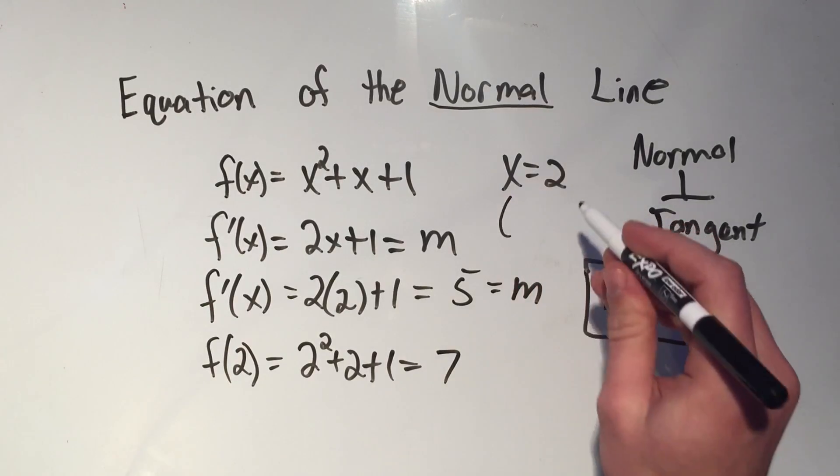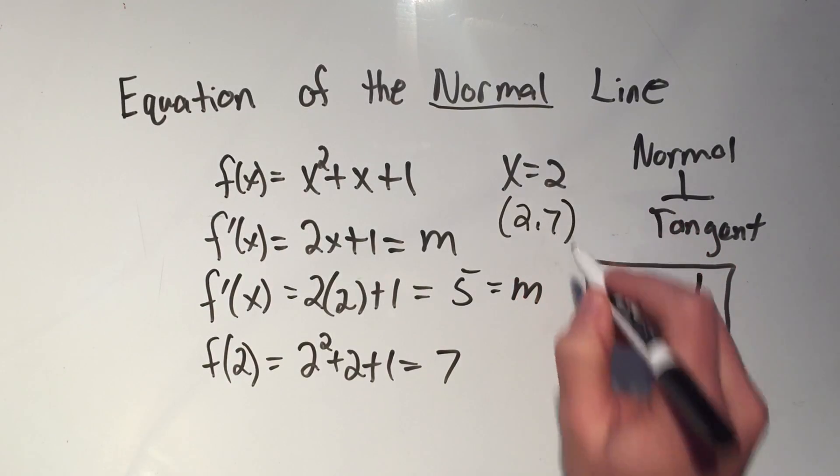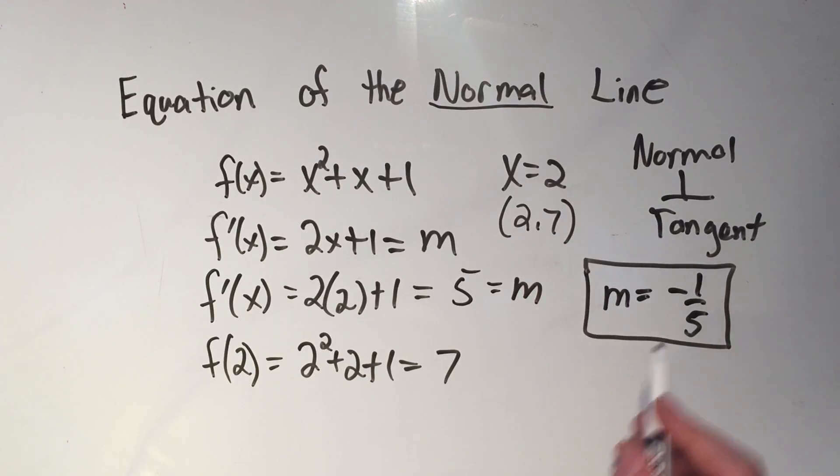That means my point is 2, 7. And now that I have a point and a slope, I can write the equation of that line, and I'll do it using point-slope form. That's usually the easiest.